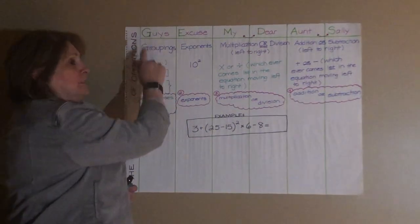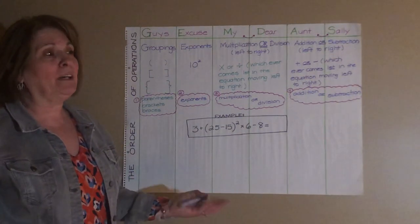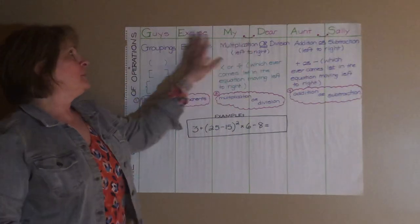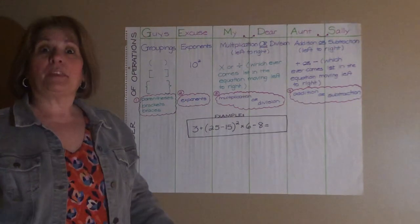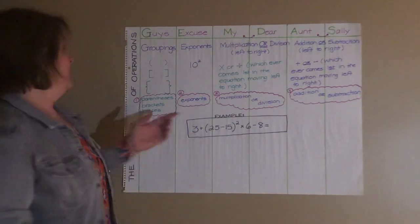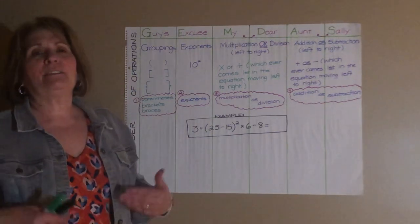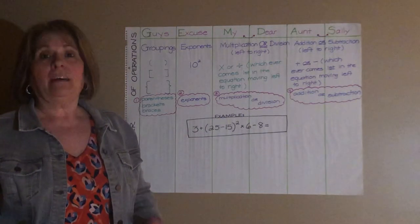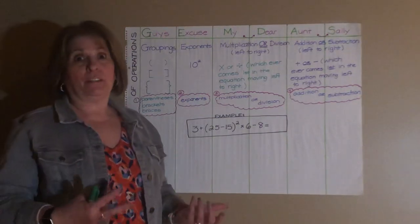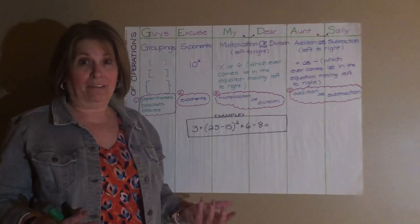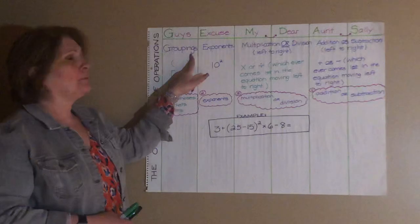Each one of the letters, just like King Henry died unexpectedly drinking chocolate milk, we're going to use the words of, guys, excuse my dear Aunt Sally, to think about the steps of order of operations. So this is one of those math conventions. It's rules that we all agree upon for solving equations. So if we think about the different parts of an equation that an equation can have, we look at first, guys.